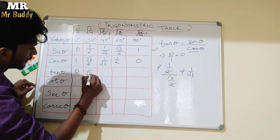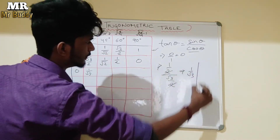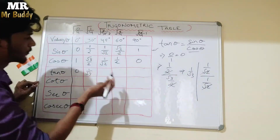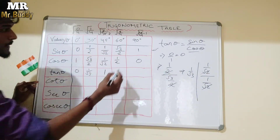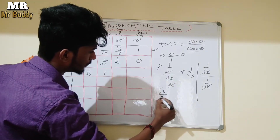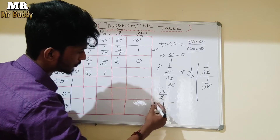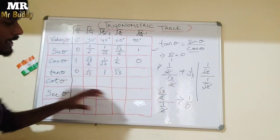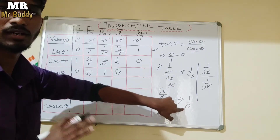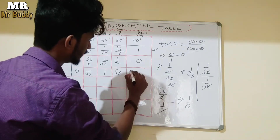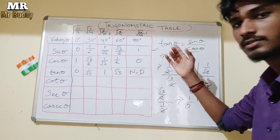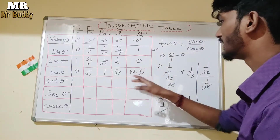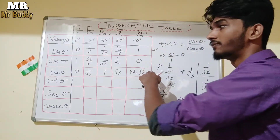So tan 30° = 1/√3. For tan 45°: 1/√2 divided by 1/√2, which gives 1. So tan 45° = 1. For tan 60°: √3/2 divided by 1/2, the 2s cancel, leaving √3. And for tan 90°: 1 upon 0 — any number divided by 0 is not defined. So tan 90° is not defined.